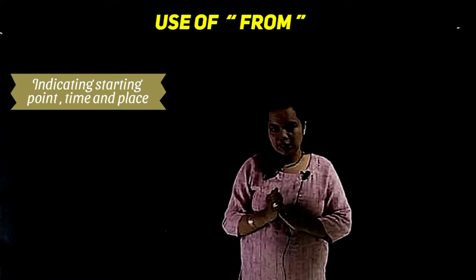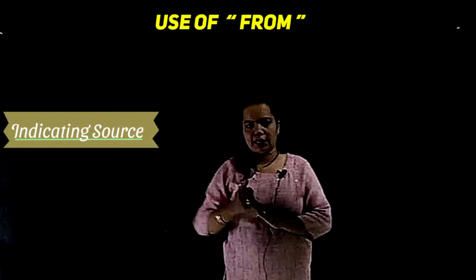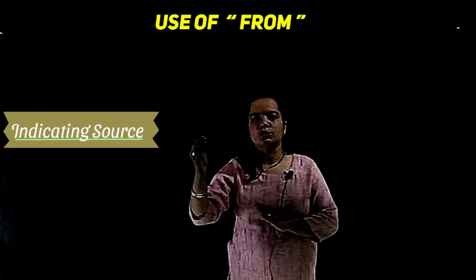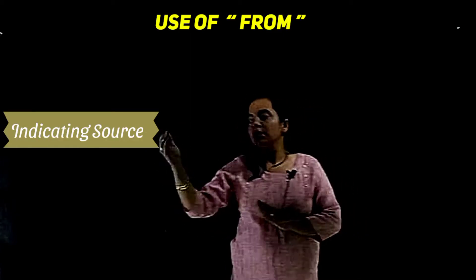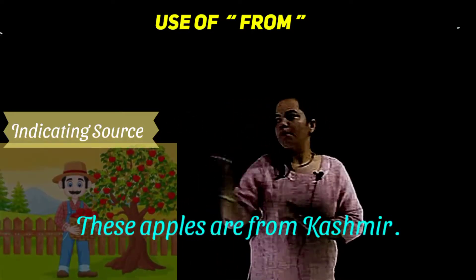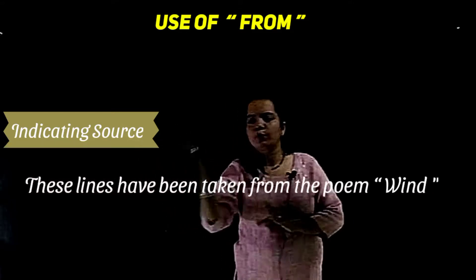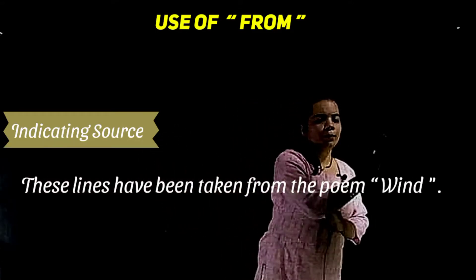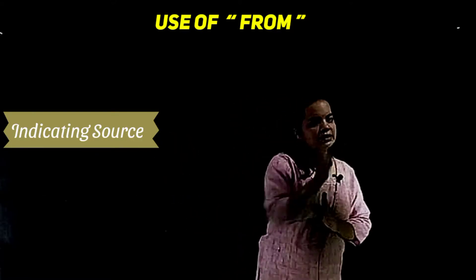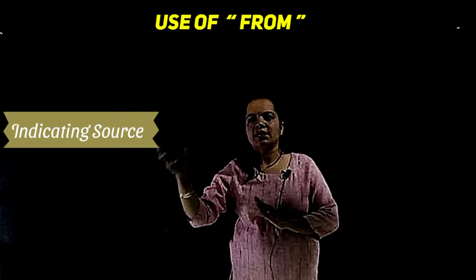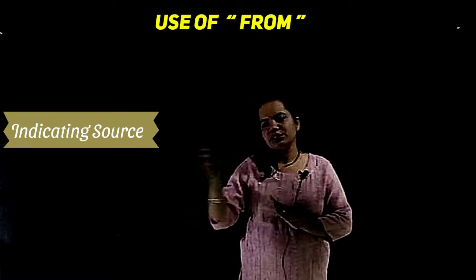Another use of 'from' is to indicate the source of something — where something came from or what its origin is. For example, 'These apples are from Kashmir,' or 'These lines have been taken from the poem Wind.' So to indicate the source of any thing or any lines, we use 'from'.